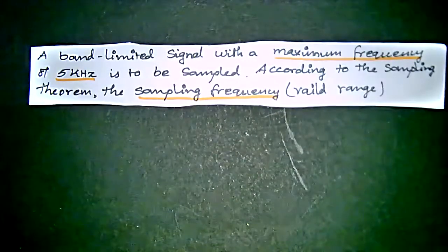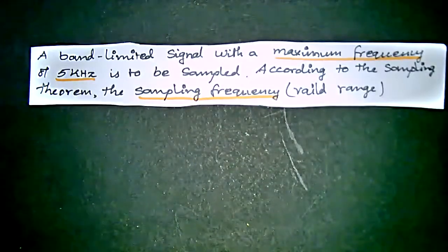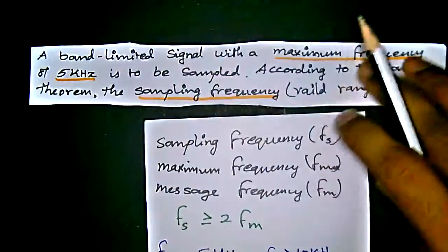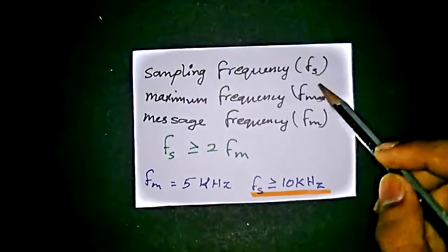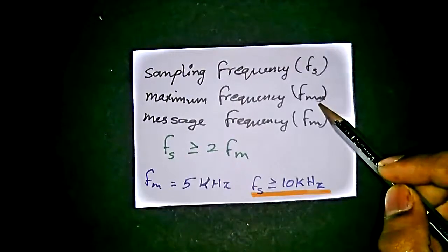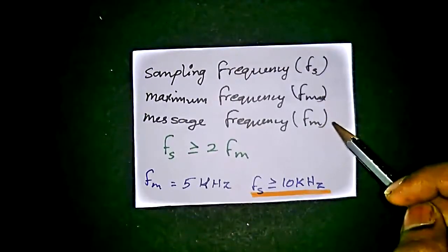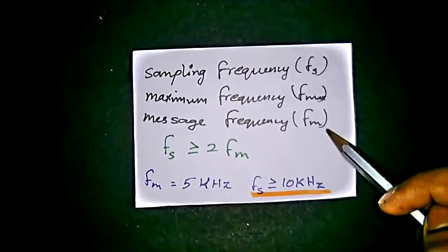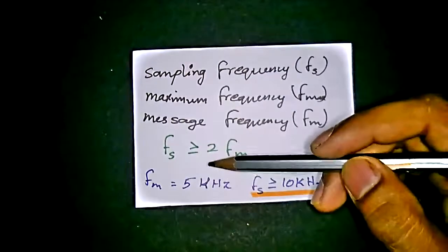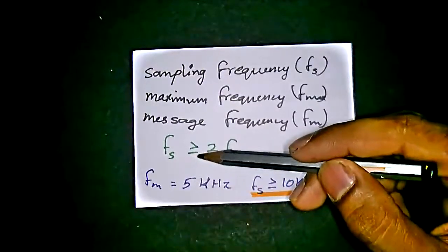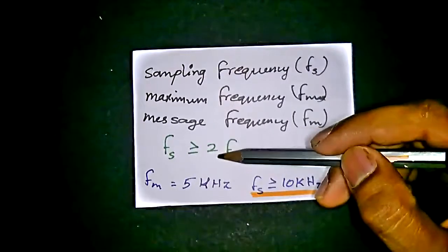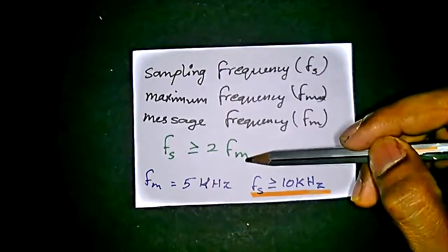The sampling theorem states that the sampling frequency fs should be greater than or equal to two times the maximum message frequency fm. That is, fs ≥ 2 × fm.